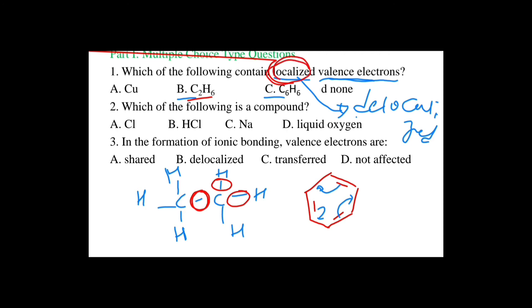Delocalized balance electrons — copper has delocalized balance electrons. In compounds, balance electrons are shared. So the bonding electron answer may vary; you can refer to different textbooks.